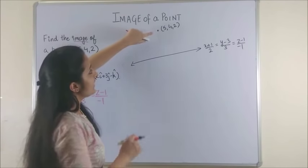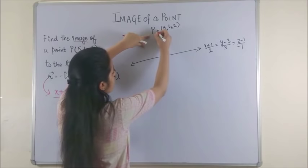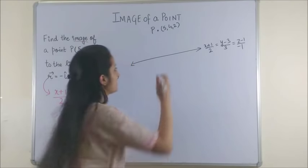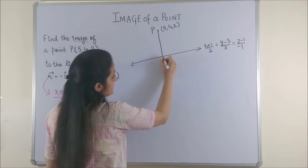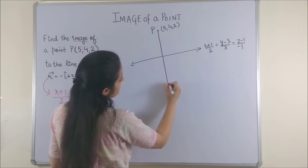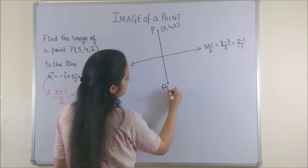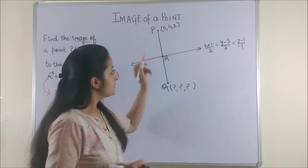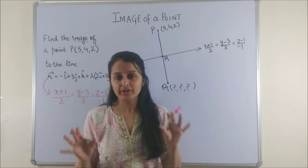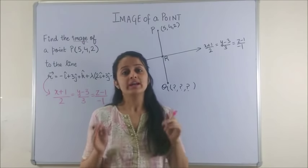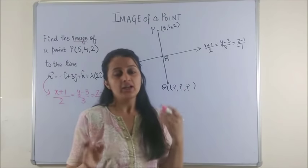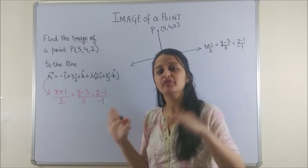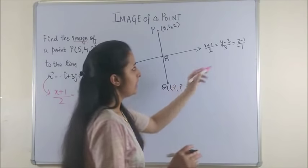Now we have to find the image of this point P. By image it is like you are treating this line as a plane mirror and at the same distance from this line you find the image of the point which I can call as Q. And we have to find the unknown coordinates. You know this point R acts like the middle point of PQ. Also it is called as foot of the perpendicular. So your question might say that find the image of a point also find the foot of the perpendicular.